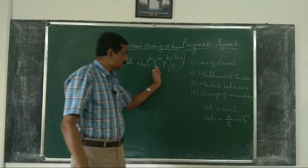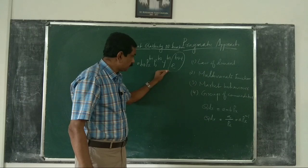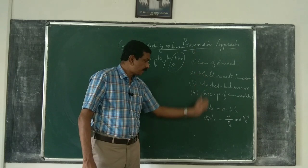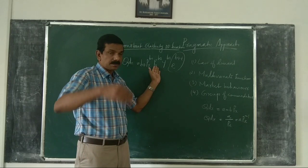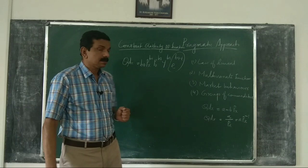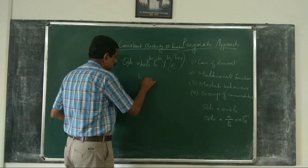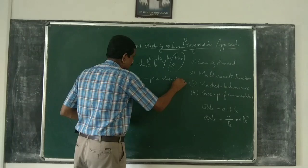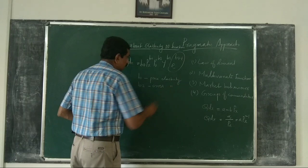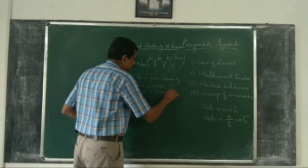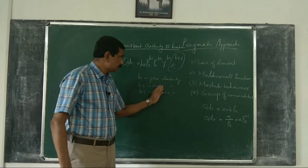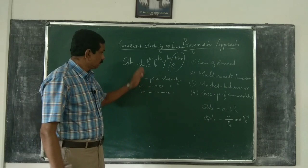So, a multivariate demand function is specified. Then the followers of the pragmatic approach collect data on quantity, price, prices of substitutes and complements, income of the consumer, etc., and estimate the parameters B0, B1, B2, and B3. Now, B1 is price elasticity of demand, B2 is cross elasticity of demand, and B3 is income elasticity of demand. B0 is the constant. B1 will be negative as it is price elasticity.